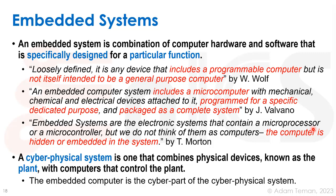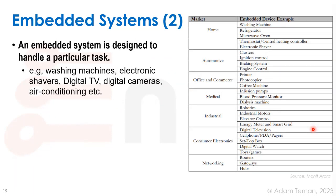Almost all embedded systems are used for something physical in the world, and therefore they're often called cyber-physical systems. A cyber-physical system combines physical devices — known as the plant — with computers that control the plant. The embedded computer is the cyber part of the cyber-physical system. We can look at a table showing different categories of markets that use embedded systems: home, automotive, office and commerce, medical, industrial, consumer electronics, and networking.